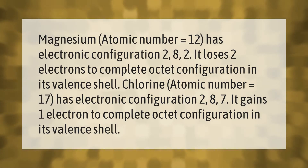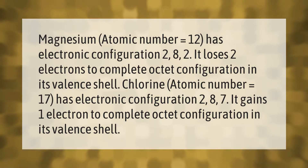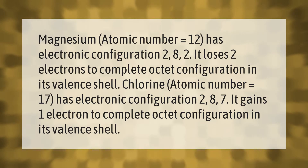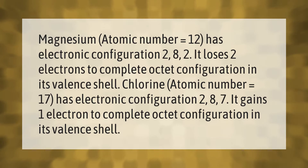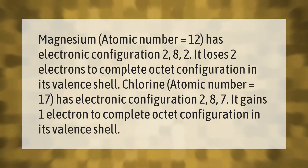Magnesium, atomic number 12, has electronic configuration 2,8,2. It loses two electrons to complete octet configuration in its valence shell. Chlorine, atomic number 17, has electronic configuration 2,8,7. It gains one electron to complete octet configuration in its valence shell.